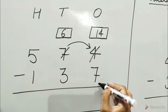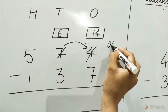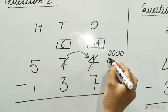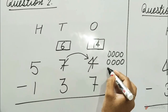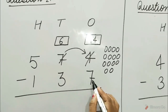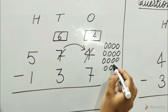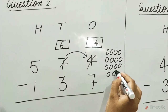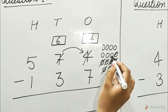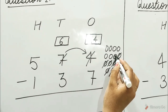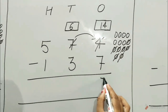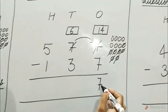Subtract the ones column. Draw 14 circles: 1 through 14. And cut 7 circles from the 14 circles: 1, 2, 3, 4, 5, 6, 7.